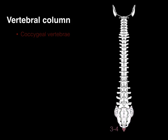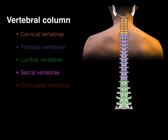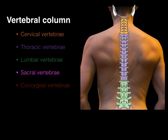Finally, three to four fused vertebrae make up the tailbone — the coccygeal vertebrae. That completes the vertebral column and each of its regions.